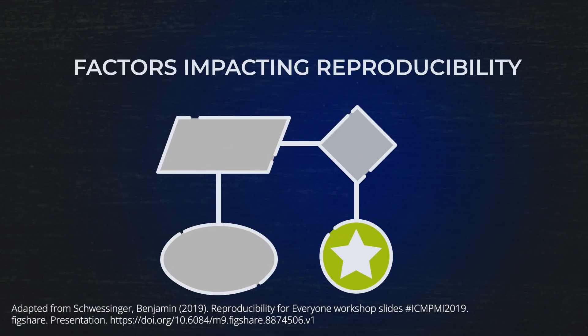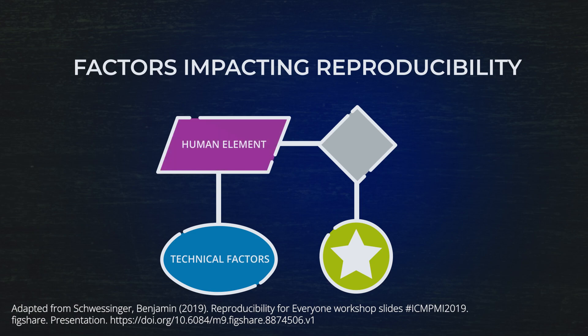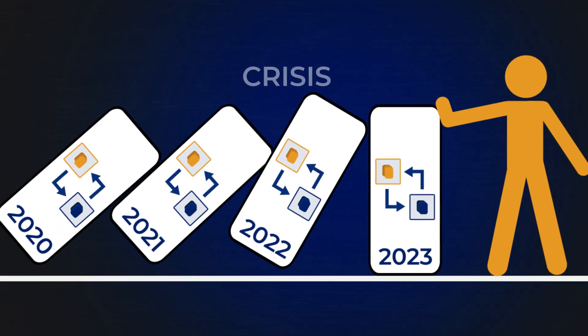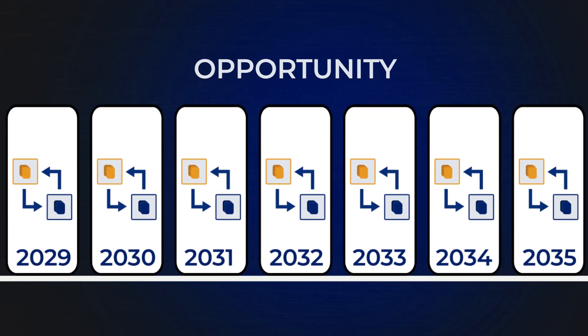As we consider developing more reproducible workflows and building a culture that values reproducibility, there are many factors that can impact success. At the foundation are the technical factors, including the tools we use and our scientific workflows. Then there is the human element of generating buy-in with a research team, and how we incentivize doing this work in the already busy and competitive culture of academia. There is no easy solution to approaching reproducibility. But some, like Lenny Tettleman, are suggesting we reframe this issue and look at it not as a crisis, but as an opportunity to work together to advance the scientific endeavor. As new tools and approaches are developed and skills are gained, we can lay a firm foundation for realizing more computational reproducibility going forward.